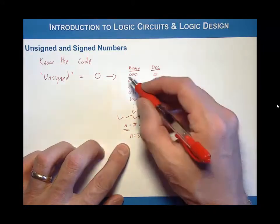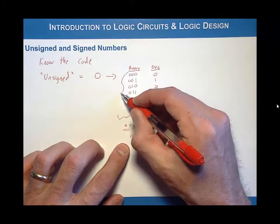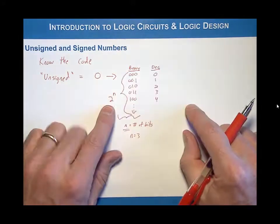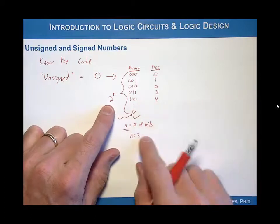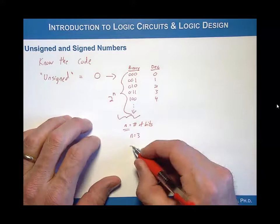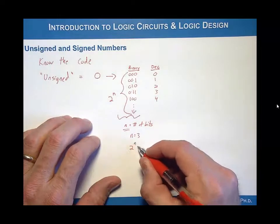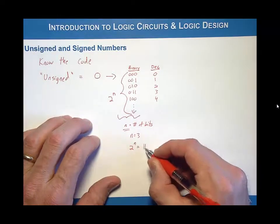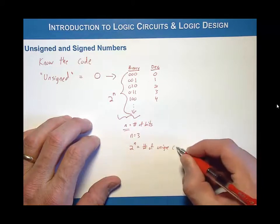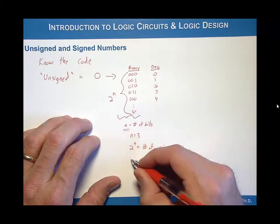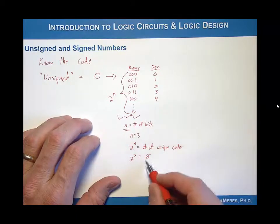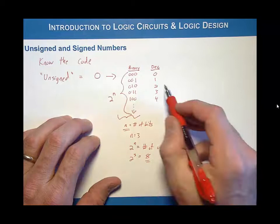If we wanted to know how many unique codes we could have, we could use the expression two to the n — the base raised to n, where n is the number of bits. So two to the n equals the number of unique codes. For this example, we had two to the three, which equals eight. So that means we can have eight unique codes.